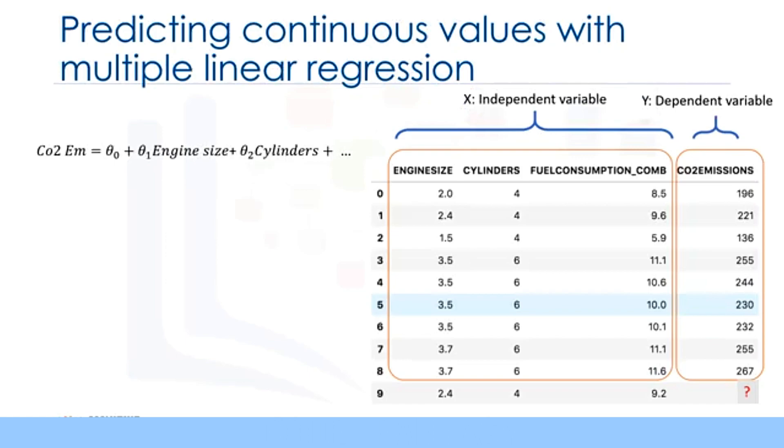Multiple linear regression is very useful because you can examine which variables are significant predictors of the outcome variable. Also, you can find out how each feature impacts the outcome variable. And again, as is the case in simple linear regression, if you manage to build such a regression model, you can use it to predict the emission amount of an unknown case, such as record number 9.